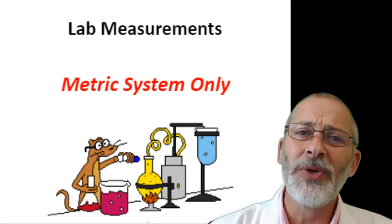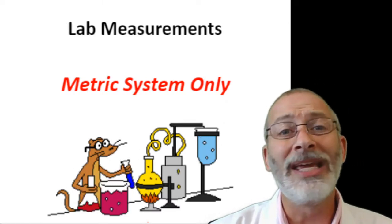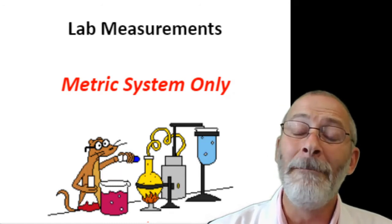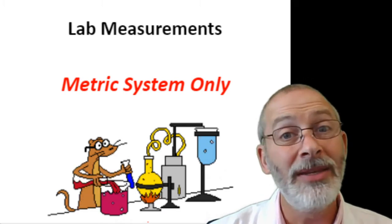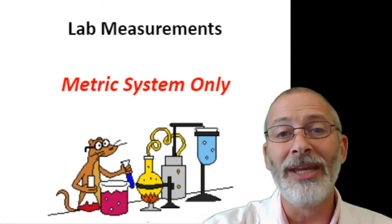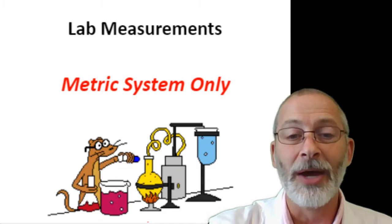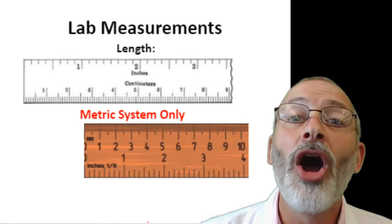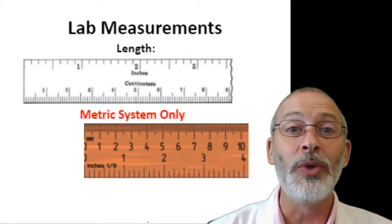As we know, in the United States you have grown up using a different system of measurement, and that may make things a little more challenging for you in the science lab because we're going to be using some different instruments. In particular, one of the instruments we're going to use to measure length are rulers, and there are many different kinds of rulers, as we've already discussed.